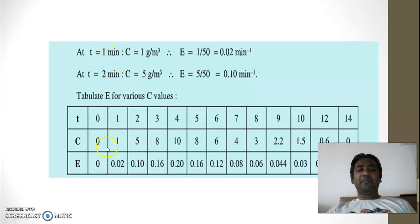For t is equal to 1 minute, we are knowing C is 1. So it means E will be 1 upon 50, where 1 is individual concentration and 50 is total concentration. So what is the corresponding value? 0.02 per minute. So in this way you will get all E values.